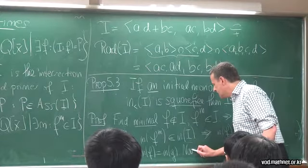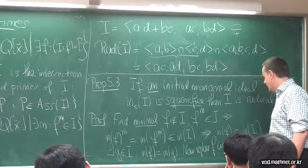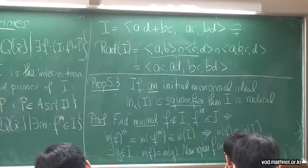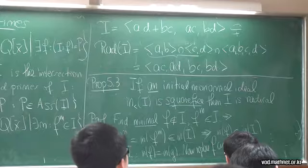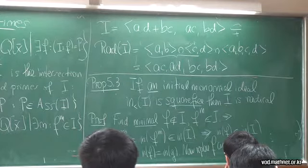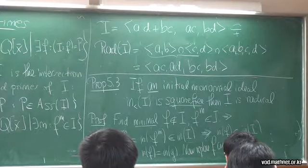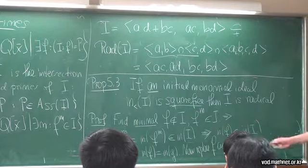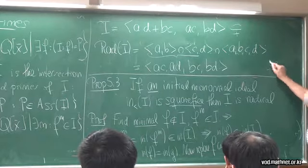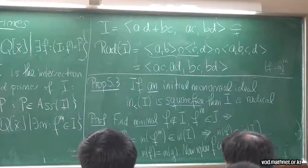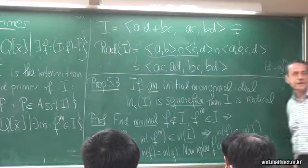Now we replace the criminal f by f minus g. Since f is not in I and g is in I, f minus g is not in I either — f is congruent to f minus g mod I. But some suitable power of f minus g will be in I, because (f−g)^m = f^m plus terms all containing g, so it lands in I. And f minus g has a smaller leading term than f, contradicting minimality. That's the proof.